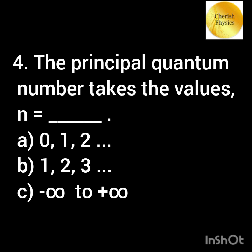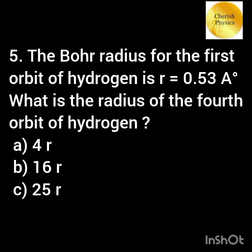The principal quantum number takes the values n equal to? The Bohr radius for the first orbit of hydrogen is r equal to 0.53 angstrom. What is the radius of the fourth orbit of hydrogen?